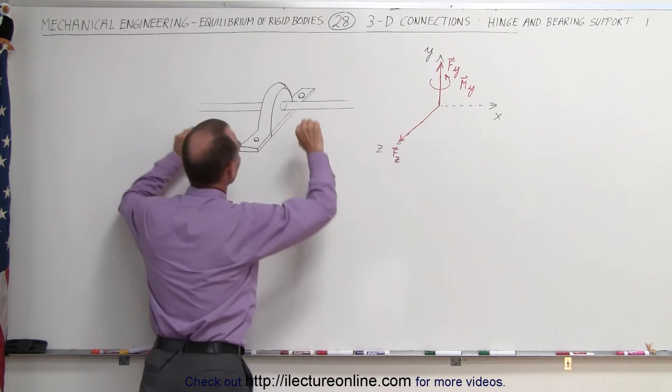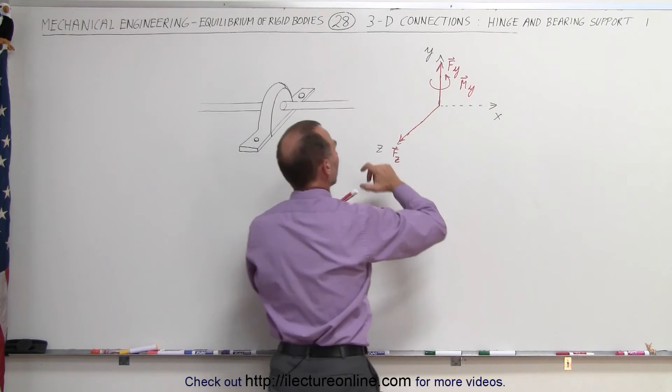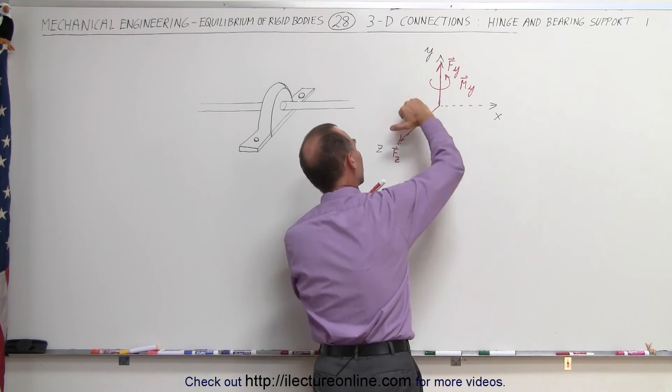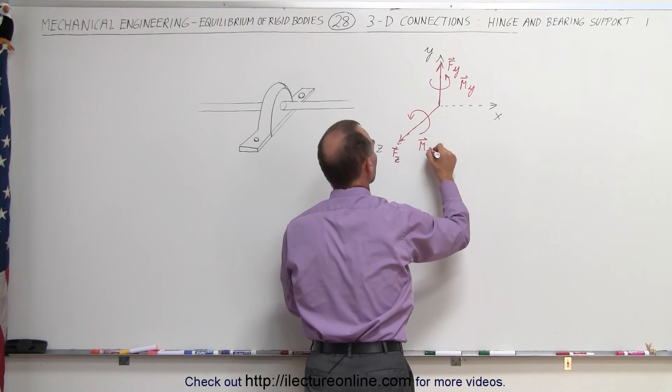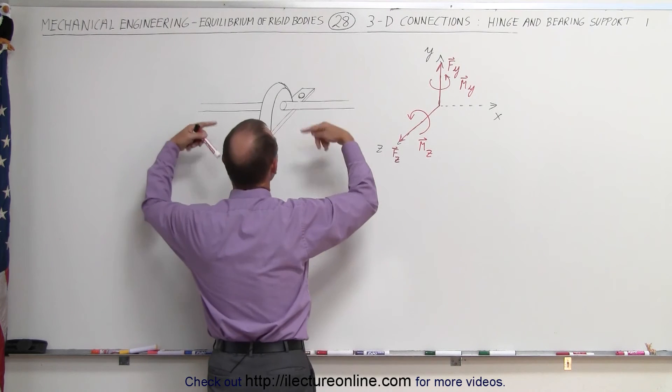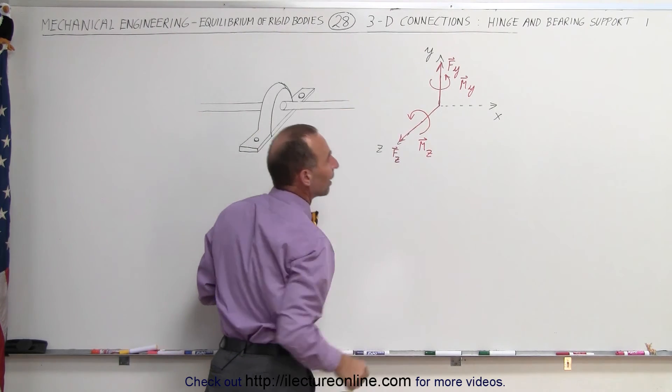And likewise it cannot rotate like this, so that creates a moment in the Z direction as well. Using your thumb this way, your fingers curl this way, so we have a moment created in the Z direction. But of course since it can freely without friction rotate in this direction, there's no moment on the X axis.